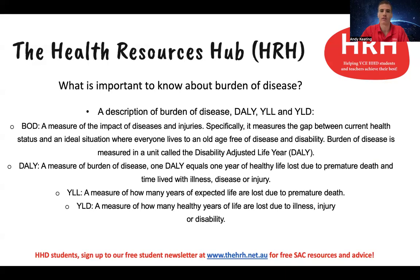So it's how much of an impact a particular disease, condition, or injury is having on a particular population — for example, the population of Australia. Specifically, it measures the gap between current health status and an ideal situation where everyone lives to an old age, free of disease and disability. Burden of disease is measured in a unit called disability adjusted life year. Essentially, when you develop a health condition, it looks at how many years of life have been lost due to either dying prematurely or living with that condition and it having an impact on your life. By measuring burden of disease, we can compare different health conditions to see which ones might have a bigger impact in a population than others.